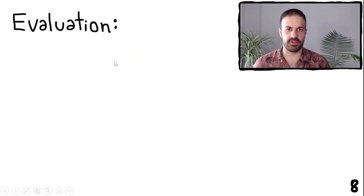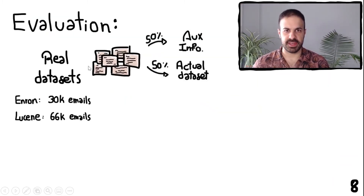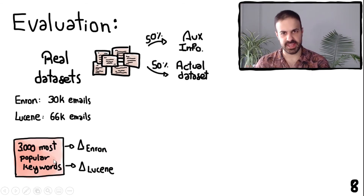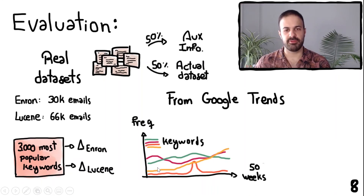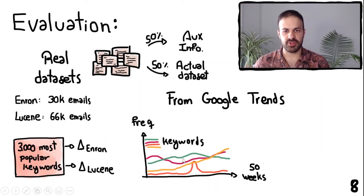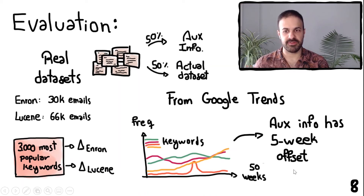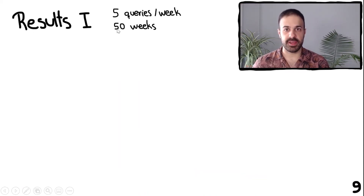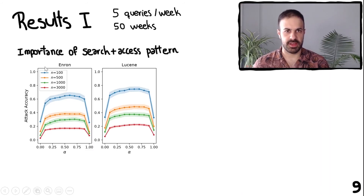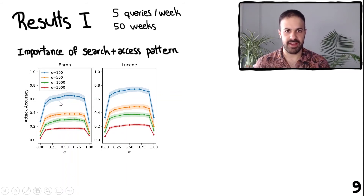For our evaluation, we consider two real datasets: Enron and Lesin. We randomly split each dataset into two halves, giving the adversary one half as auxiliary information and using the other half as the true encrypted dataset. We extract the 3000 most popular keywords from each dataset and get query trends from Google Trends, where each color represents the trend of a different keyword. We run experiments for 50 weeks, generating the user's queries each week following a Poisson distribution whose rate is given by these trends. To give the adversary imperfect information, we provide them frequency trends with a 5-week offset. We generate queries for 50 weeks with an average of 5 queries per week and consider different keyword universe sizes. Attack accuracy is measured as the percentage of queries correctly guessed, with lines showing the average of 30 runs and shaded areas showing 95% confidence intervals.